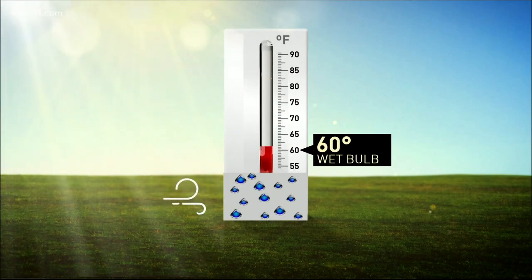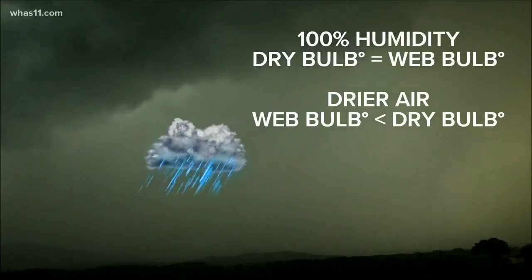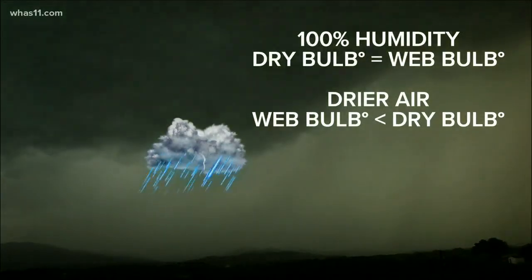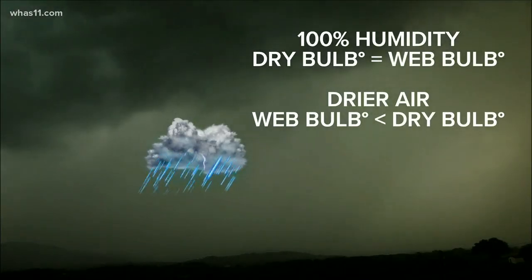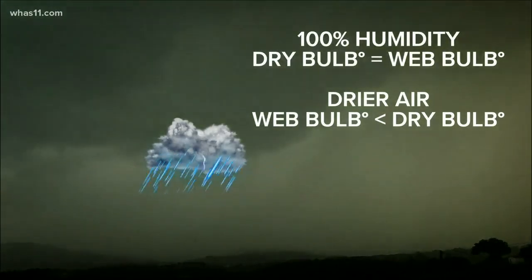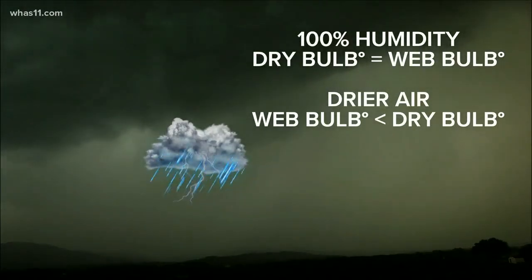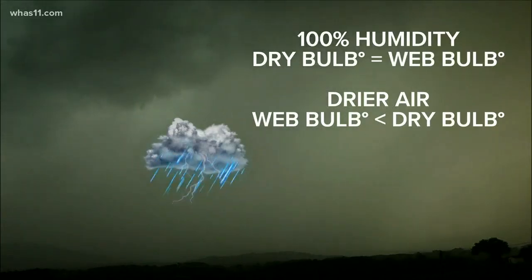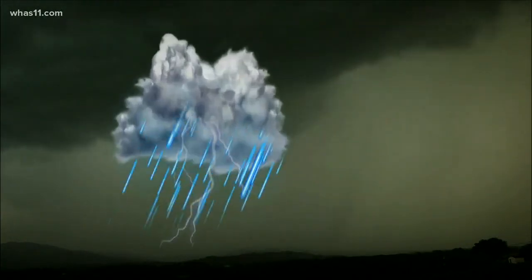So why would we do that? When the air is 100% saturated, meaning at 100% humidity, the dry bulb or air temperature is equal to the wet bulb. But when the air is drier, the wet bulb temperature is lower than the air temperature. That's because when water evaporates, it cools the air around it. Think about how your swimsuit gets chilly after getting out of the pool. So the wet bulb is usually lower than the air temperature.